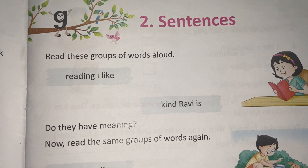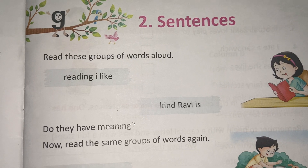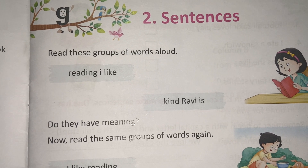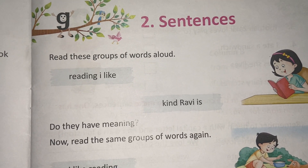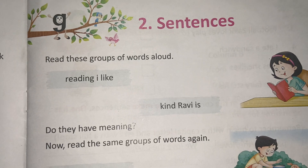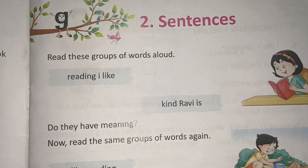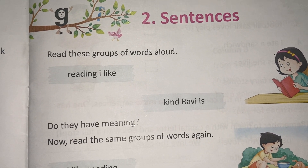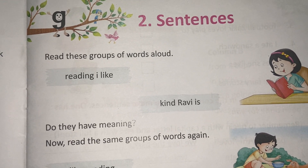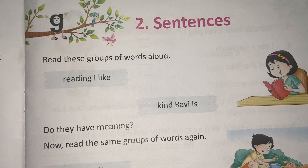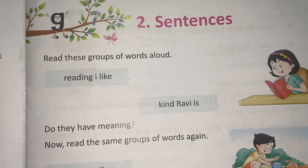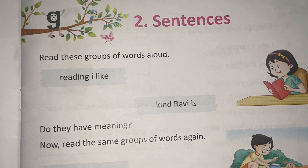For example, if I say 'today hot day is' — that is a wrong sentence. What will be the right sentence? Today is a hot day.